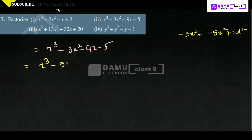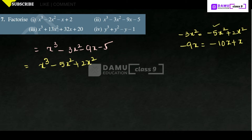So we have -5x² + 2x². Here -9x is given. For that, we write -9x as -10x + x. The idea is to use multiples of 5. So we write -10x + x - 5 from the remaining terms. Now you can take the groups: first two and last two.